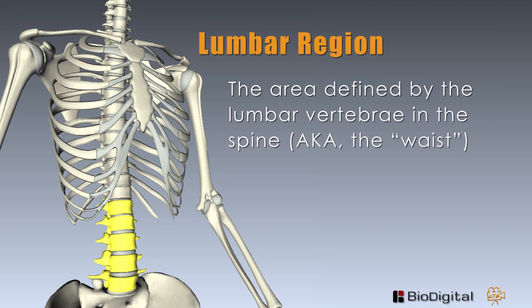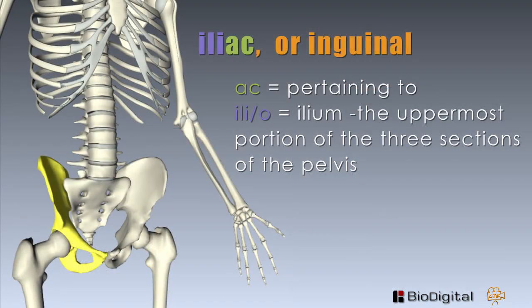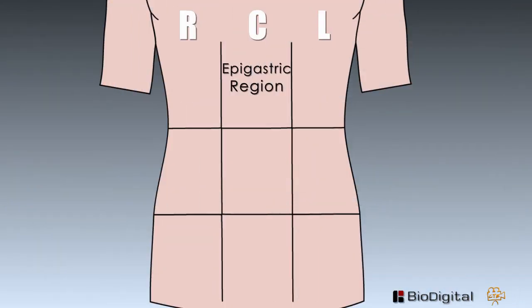Below the lumbar we have the right iliac or inguinal. This is in the uppermost portion of the three sections of the pelvis, or the groin area. Again, -ac means pertaining to, and ilio or ilium is the uppermost portion of the three sections of the pelvis.